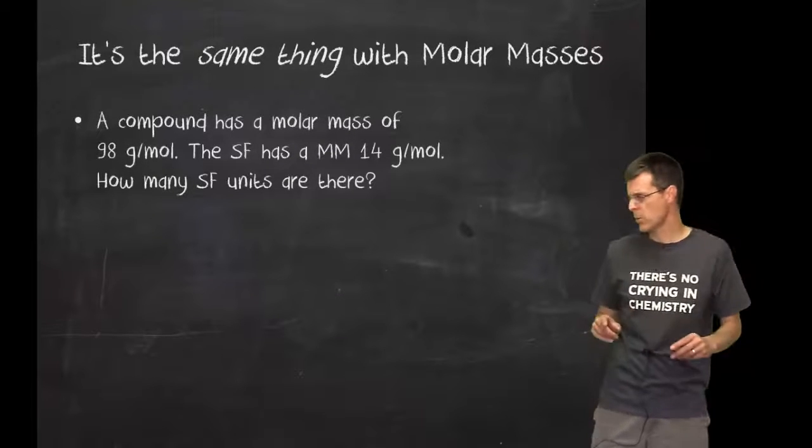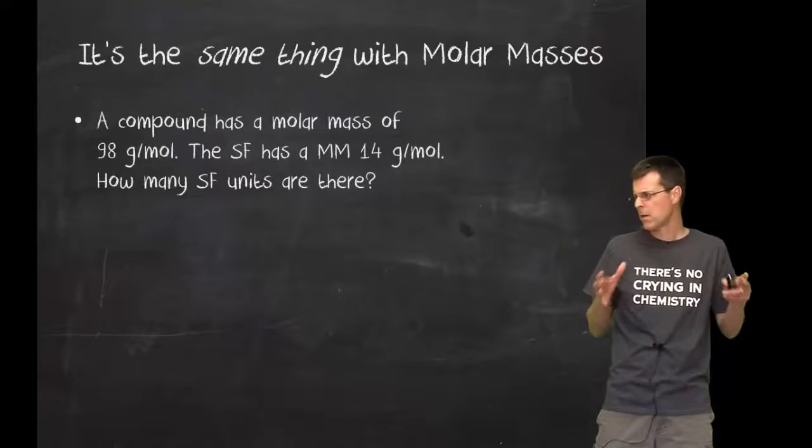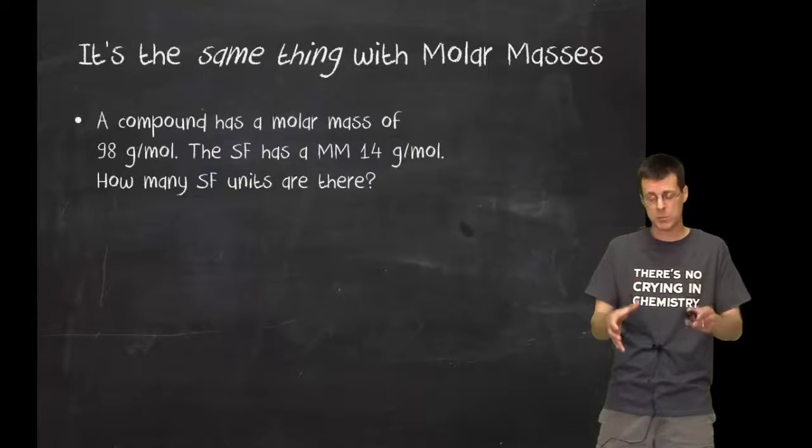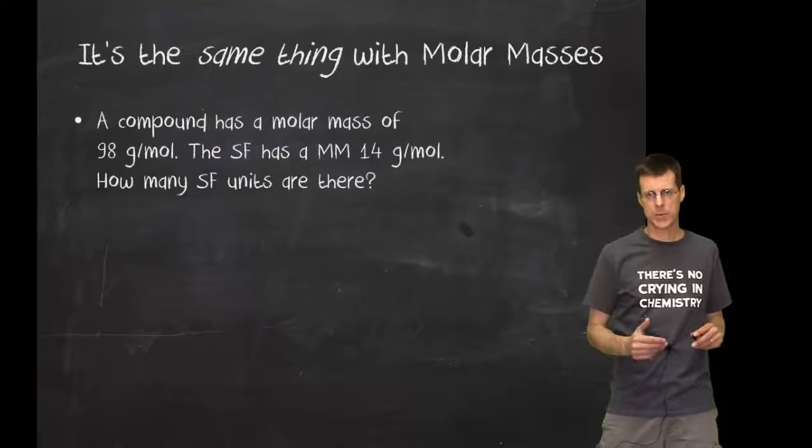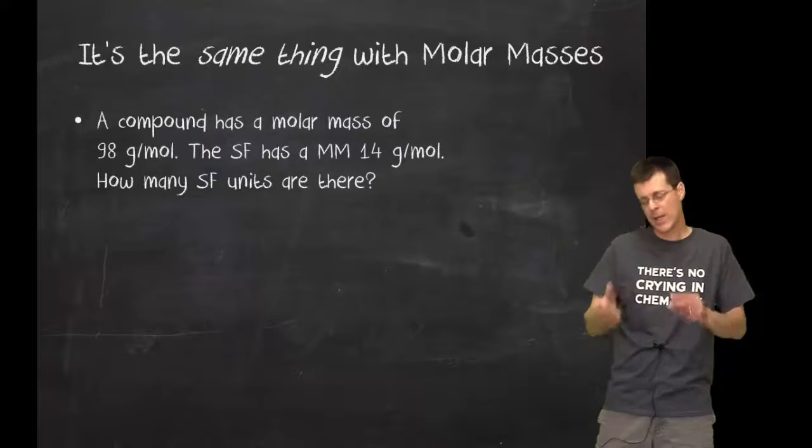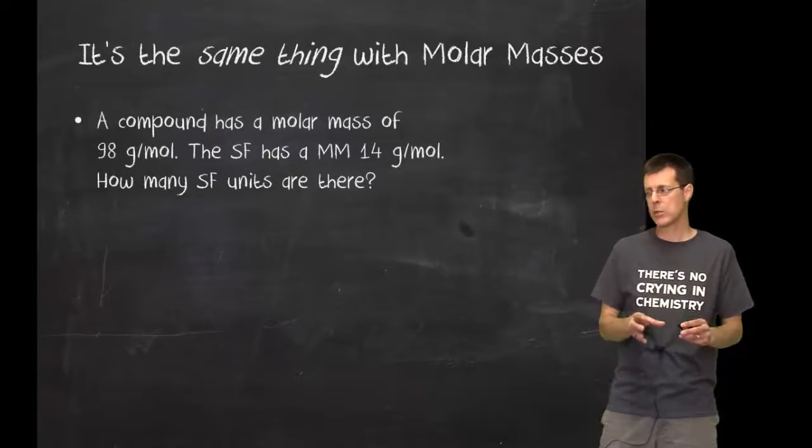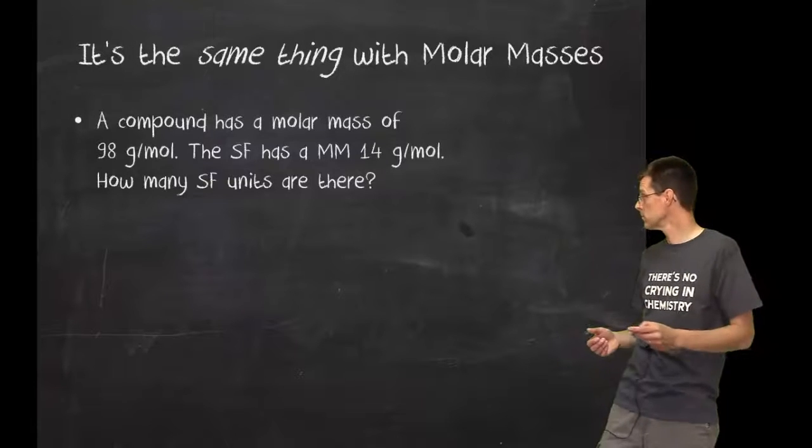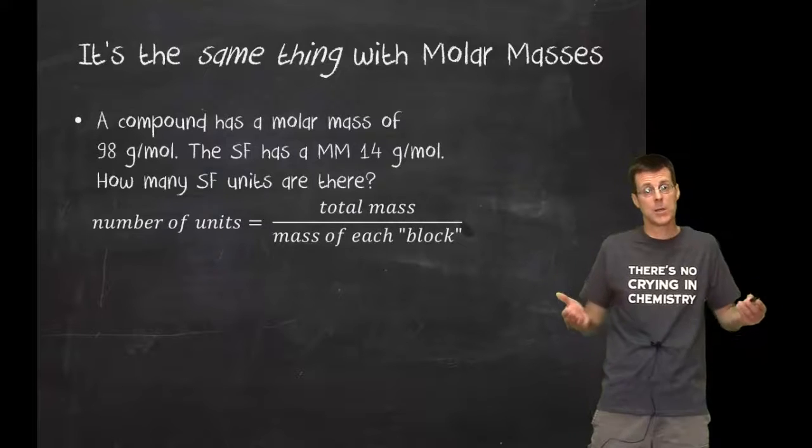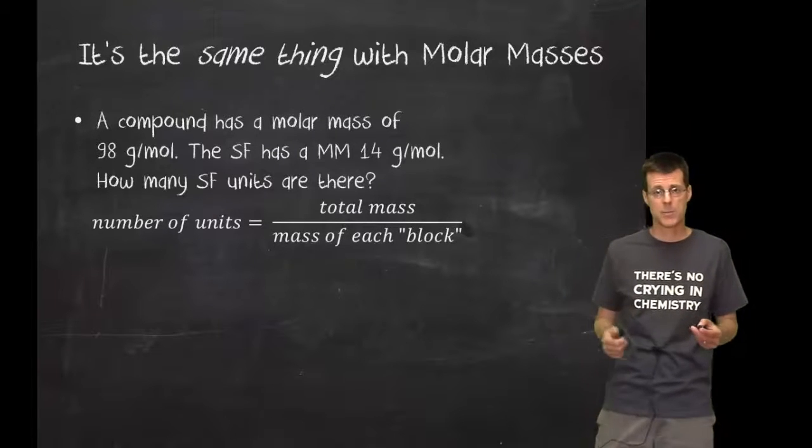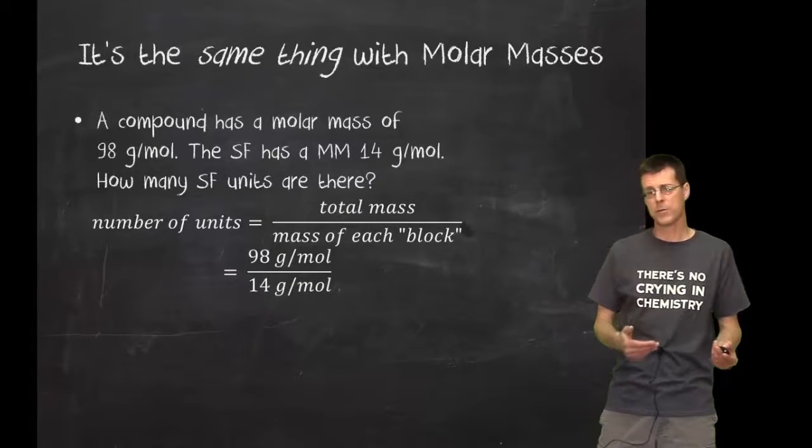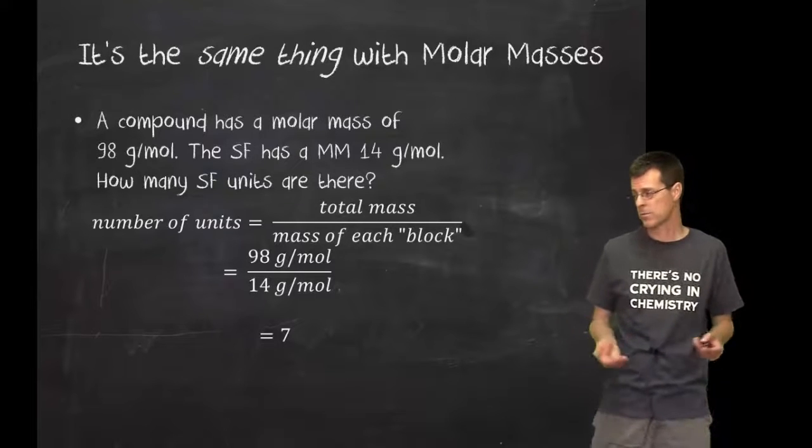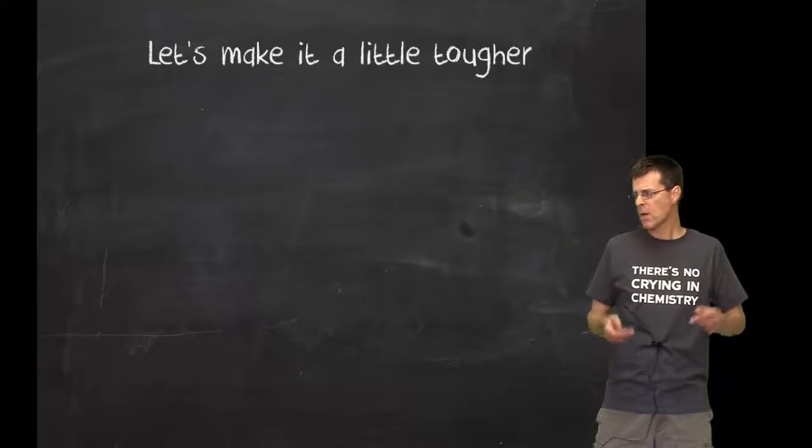Think about this in chemical formula terms. I have the total mass of all the blocks put together, and I know how much each block is. It's going to be the same thing. If I had a compound where the total molar mass was 98 grams per mole, and each simplest formula unit block is 14, how many units do I have? Same thing. Total mass divided by the mass of each block. 98 divided by 14, and you probably know your 14's timetable, but that comes out to be 7. 7 times 14.